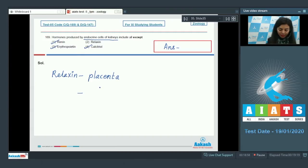It is secreted near the end of pregnancy. During labor, it softens the pubic symphysis. So the right answer here is option number two because it is not produced by kidney.